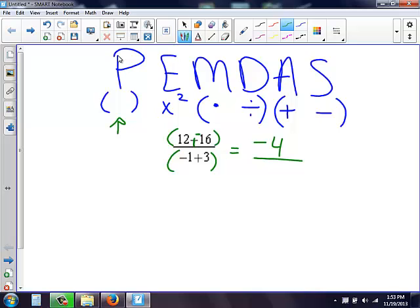Now on bottom, we do our parentheses. We have negative 1 plus our 3, we get a positive 2. So I have a negative 4 over 2.